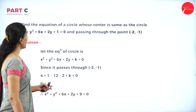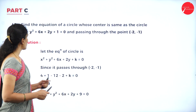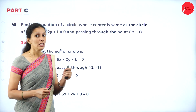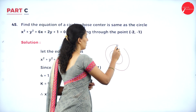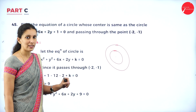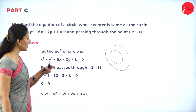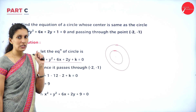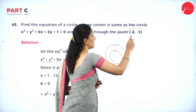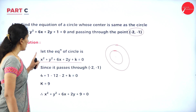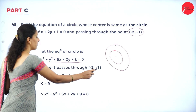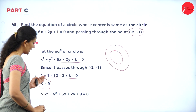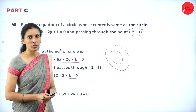Find the equation of a circle with the same center as x² + y² + 6x + 2y + 1 = 0 and passing through the point (-2, -1). Since the circles are concentric, the center is the same and only the constant changes. Let the equation be x² + y² + 6x + 2y + k = 0. Substituting x = -2 and y = -1, solve to find k = 9. Substituting back, the required equation of the circle is x² + y² + 6x + 2y + 9 = 0.